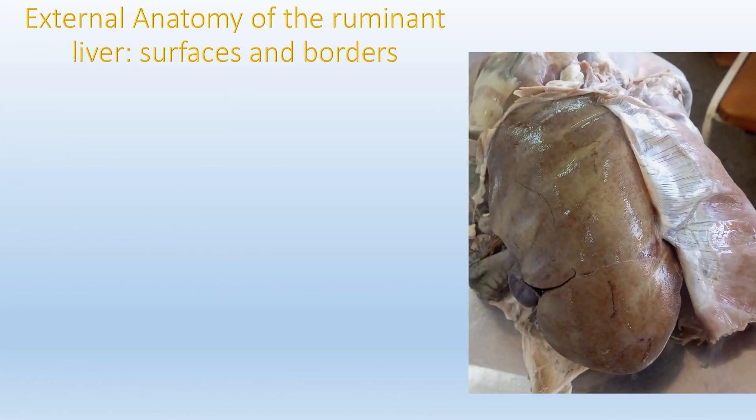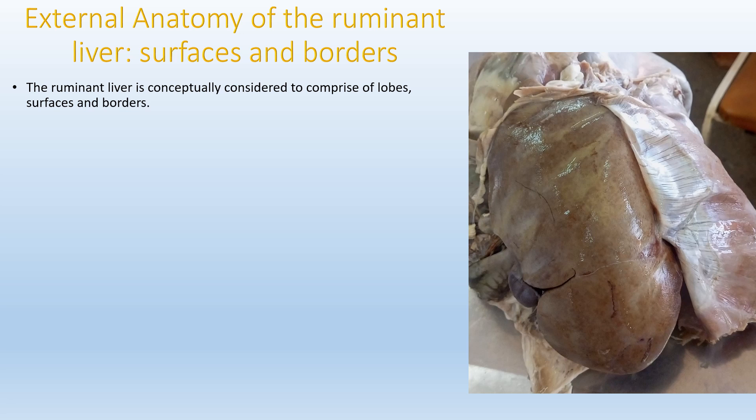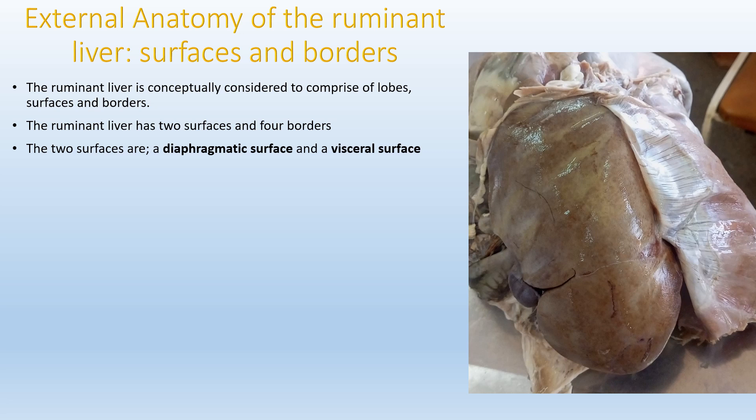On this slide I'll consider the external anatomy of the ruminant liver by looking at its surfaces and borders. The ruminant liver is conceptually considered to comprise lobes, surfaces and borders. It has two surfaces and four borders. The two surfaces are the diaphragmatic surface and the visceral surface. The diaphragmatic surface follows the hollow shape of the right half of the diaphragm — the liver itself produces the dome shape of the right side of the diaphragm.